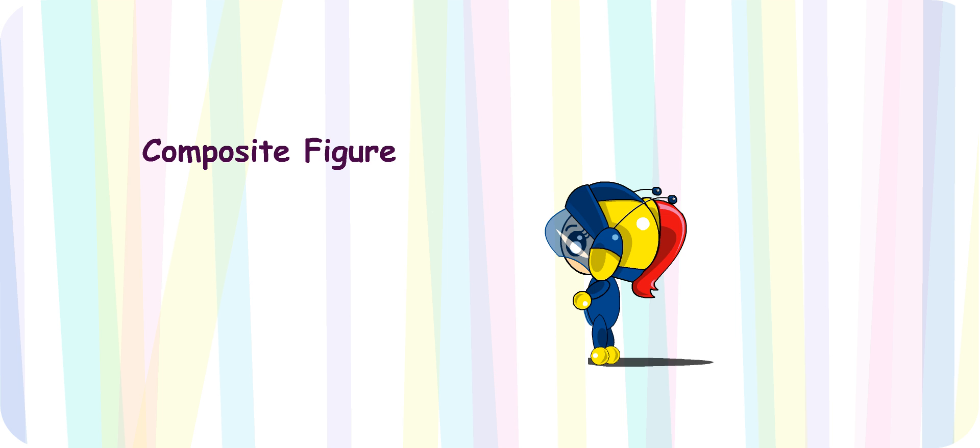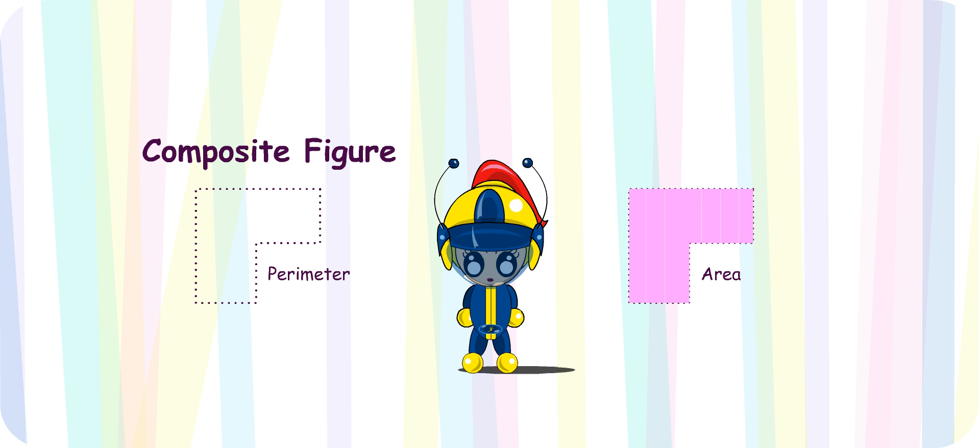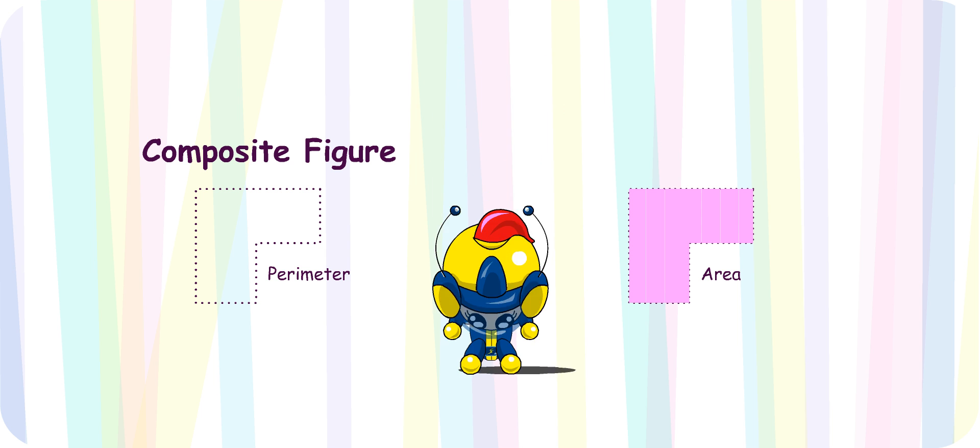Hi Turbo Girl! In the last lesson, we looked at how a composite figure is formed and how to find its perimeter. Today, we are going to learn how to find the area of composite figures. Turbo Girl, are you ready to start? Yeah, let's go!